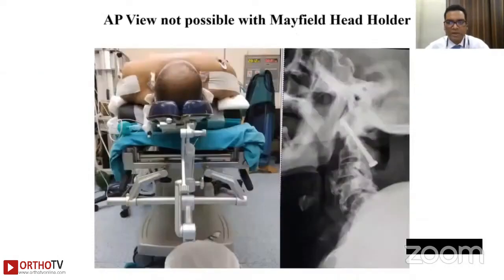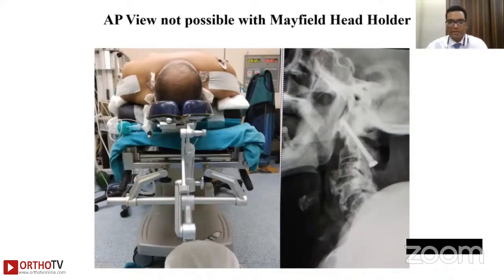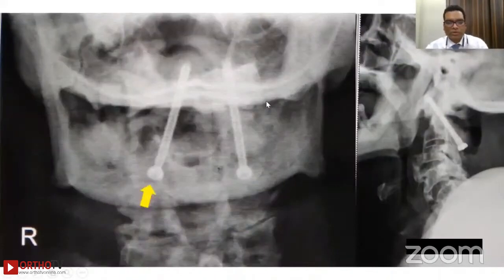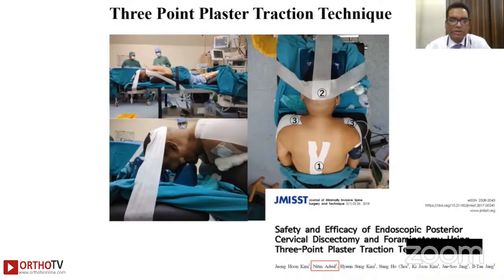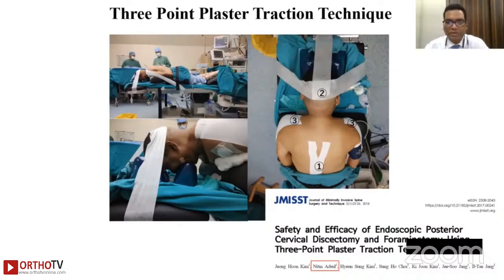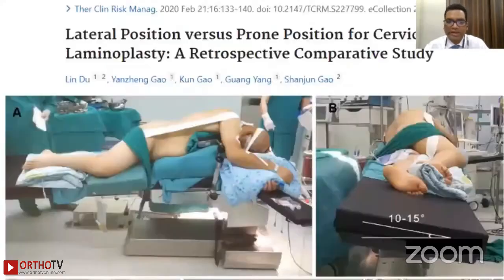Anterior pelvic bones are also important pressure points. Regarding the Mayfield head holder: most standard tables come with a metallic attachment at the front, making AP X-ray impossible — only lateral X-ray is feasible. We encountered this complication when one screw was medially placed. We have published a modification using a three-point plaster traction axon on a routine horseshoe, allowing the patient to be positioned and strapped for posterior cervical procedures — including foramenotomy, laminectomy, laminoplasty, lateral mass fixations, and C1-C2 — while permitting both AP and lateral views.